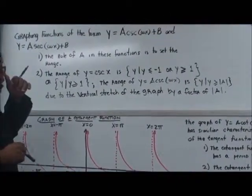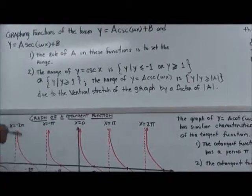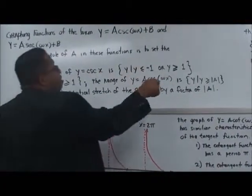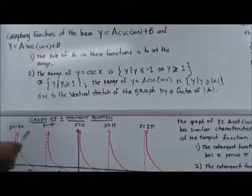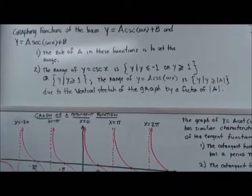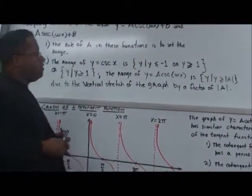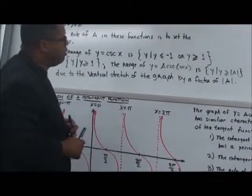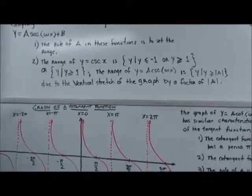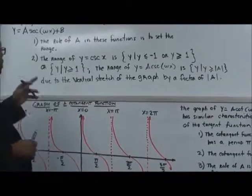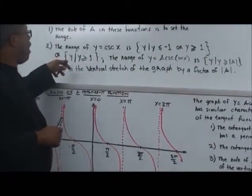And the range of y equals cosine x is now the set of all y, such that y is less than or equal to 1, or y is greater than or equal to 1. And so, or you can say, well, here, the set of all y, such that,